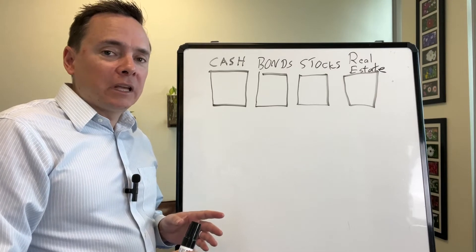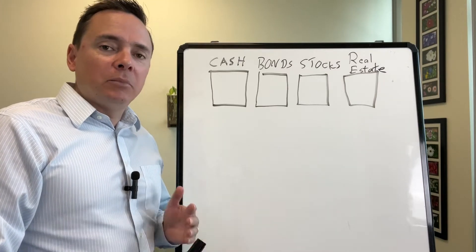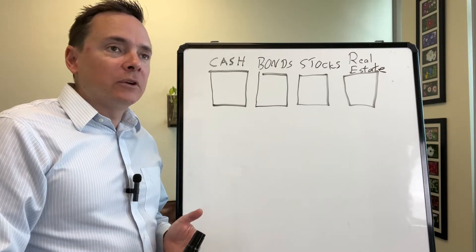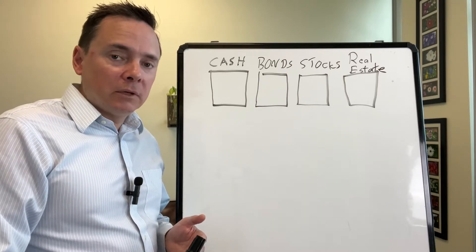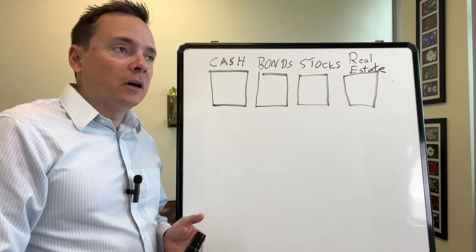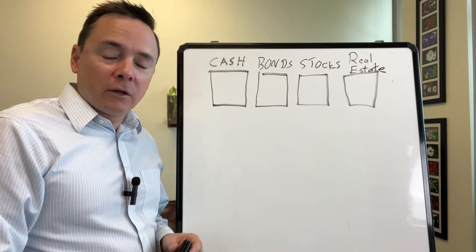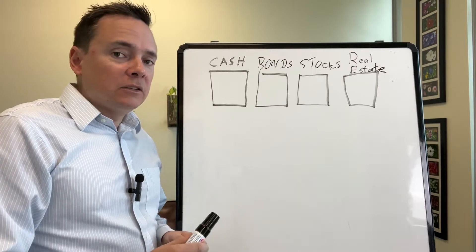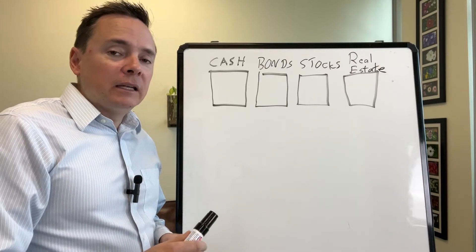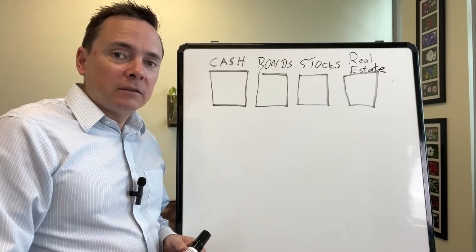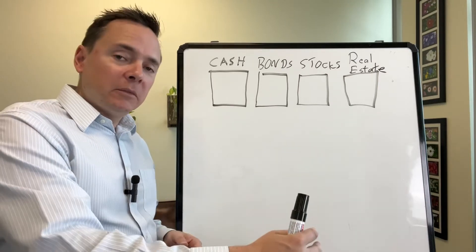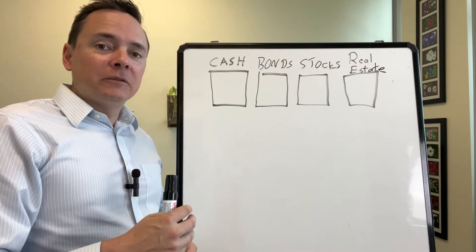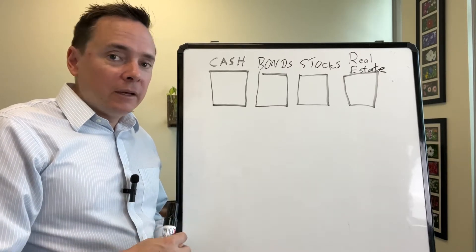Bonds — a lot of people don't understand exactly what they are, but they're so simple. A bond is very simply you are loaning money to someone. You are the bank. For example, let's say Sarasota Memorial Hospital needs money to grow and they're going to build a new wing. They could go to the public and say, we will pay you 3% interest each and every year for 10 years, and at the end of the 10 years, we'll give you your money back. You are loaning somebody money, they pay you interest, and at the end of the term they give you back your principal. That's all a bond is.